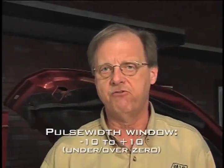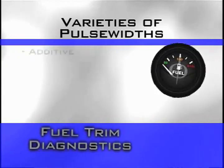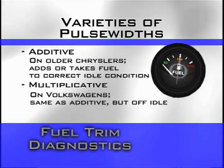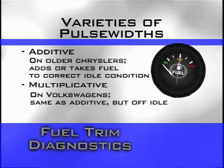It means the system is working properly. We have a little window — we like it to be between minus 10 and plus 10. If you're in that range, the system is working okay. Now, on some older Chrysler cars there's a thing called additive pulse width, which means at idle they added or took away fuel to correct a lean or rich idle condition. Volkswagens also do the same thing — they have an additive and a multiple factor. The additive factor takes away fuel at idle, and I think it's 32 that you look at in that block. Additive is for idle; the multiple factor is for off-idle.